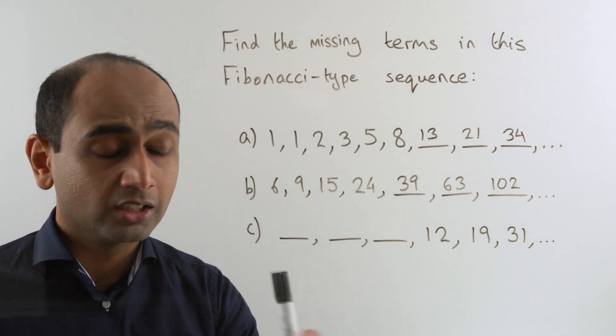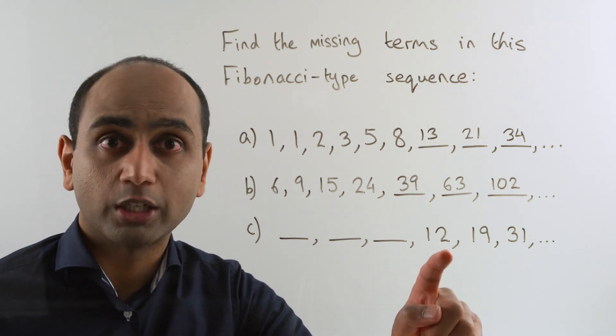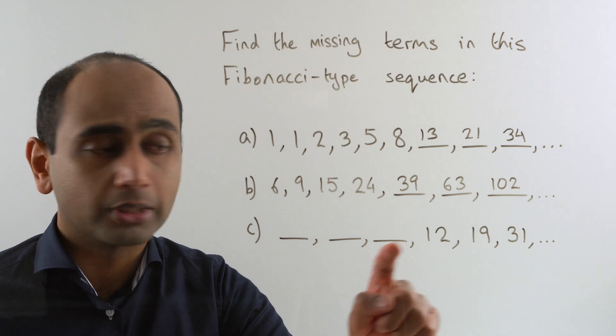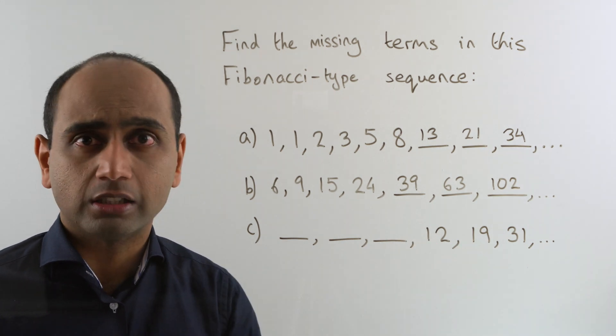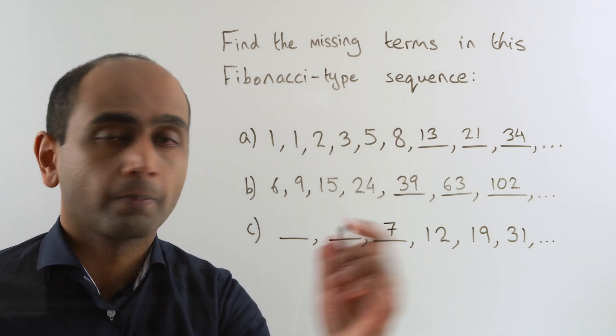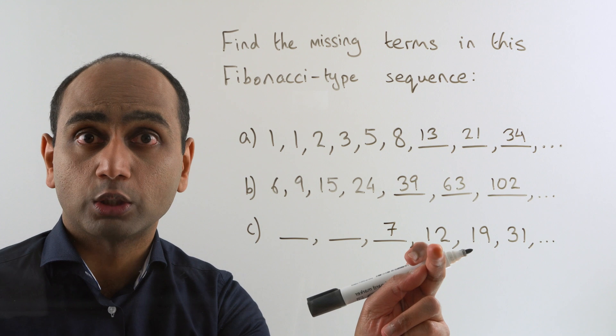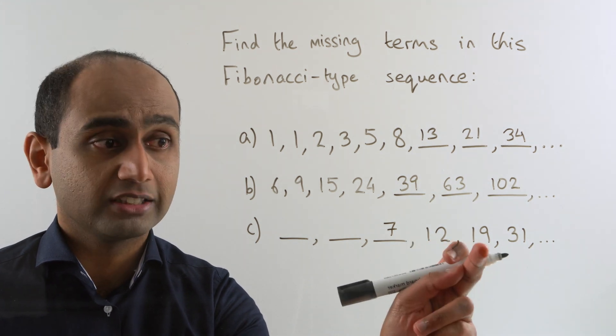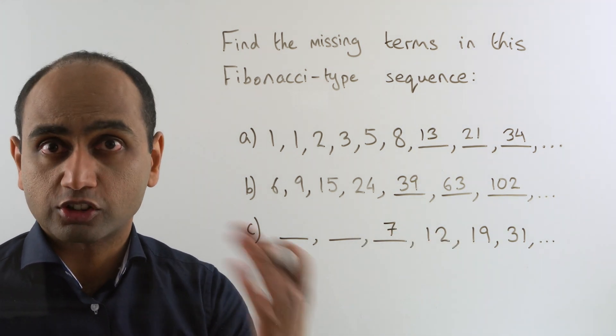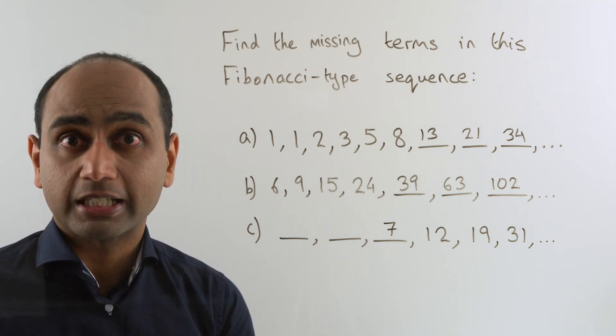Well it should be what we get when we add this missing number to 12. So what missing number plus 12 gives us 19? Well that's 7. Another way of working that out would be to do 19 minus 12. If you subtract 12 off 19 you get 7. Let's just test this: 7 plus 12, yes that's 19. So we've got this missing number here.